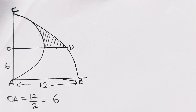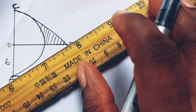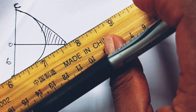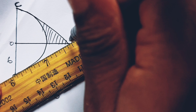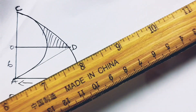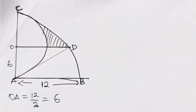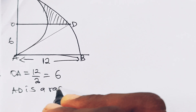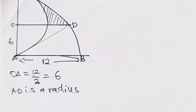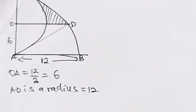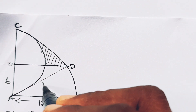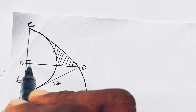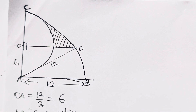Now let us join from here to here. AD is also a radius of this circle, so it is equal to 12 units as well. This angle is 90 degrees and this angle is 90 degrees.